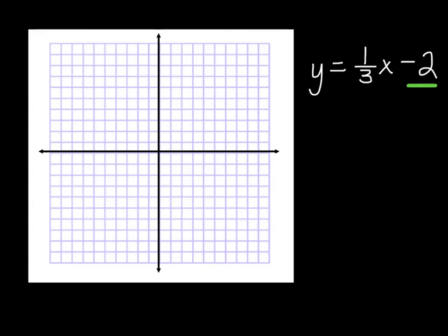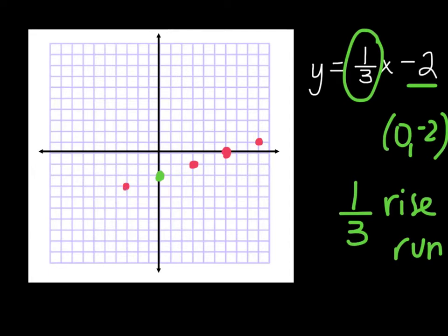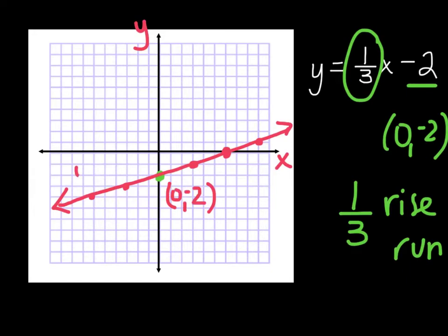For this next example, my y-intercept looks like it's (0, negative 2), so I come to my graph and put that point at negative 2. The slope is 1 third, so remember it's rise over run. From that point, I go up 1 and then over 1, 2, 3 — there's my next point. Again, up 1, over 1, 2, 3. To get points going back the other direction, I go down 1, over 3. It's making a straight line, so I connect and extend it. I graphed that without making a table. I'll label my x and y, my y-intercept, and the equation to make this a complete graph.